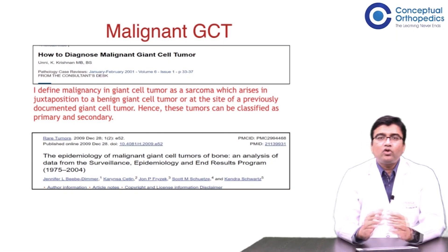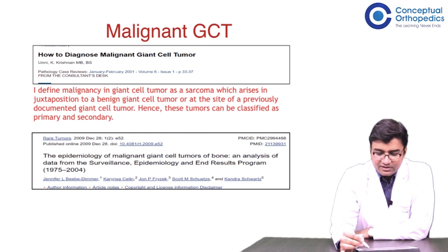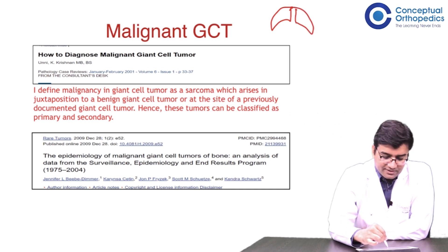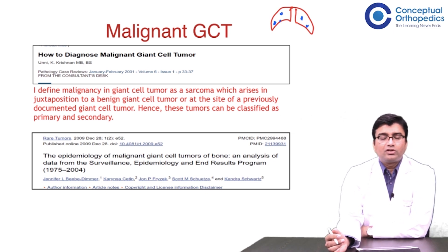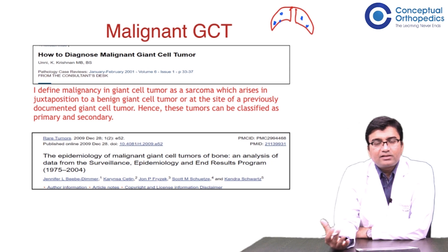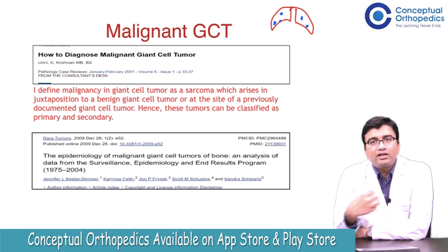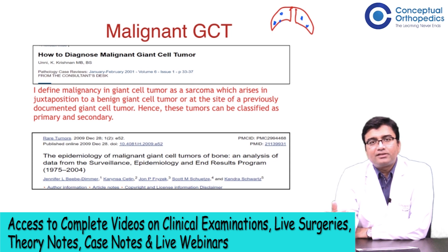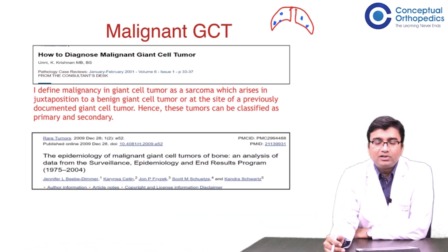Coming to the point of malignant GCT, we know there is a lesion, and in the lungs sometimes you see these tumors having lung nodules. Many times even oncologists discuss with me and feel confused — is it a sarcoma when you see the lung nodules? What is malignant GCT? Is it the same as sarcomatous transformation in GCT, or is it a sarcoma, or a simple GCT which may spread to the lung?